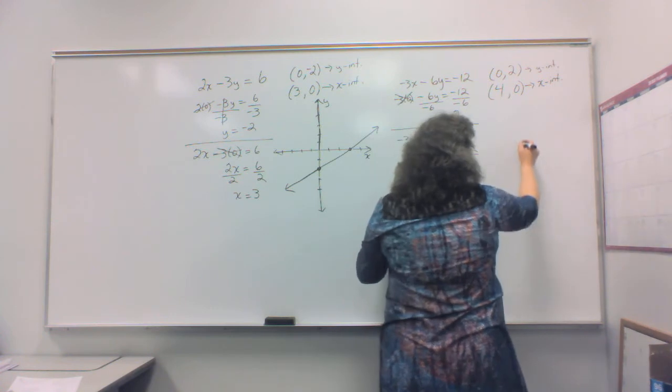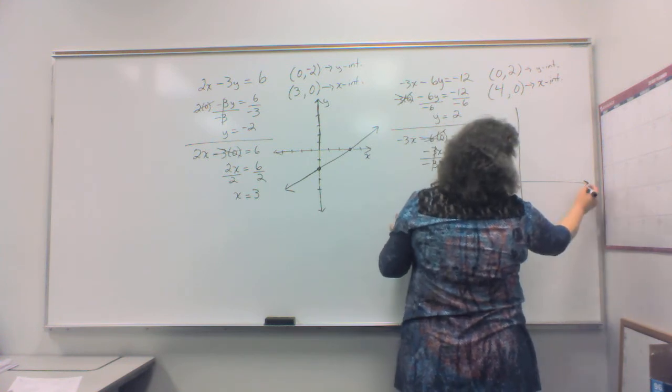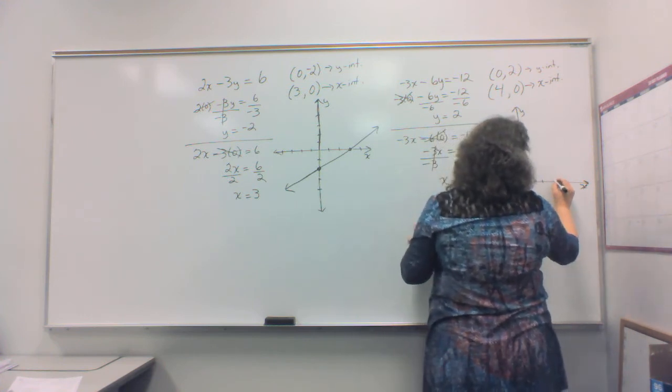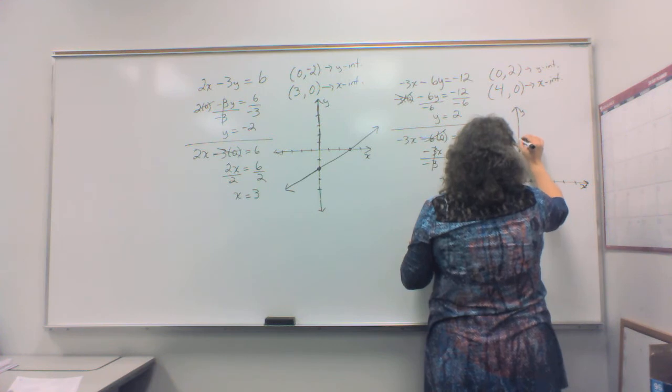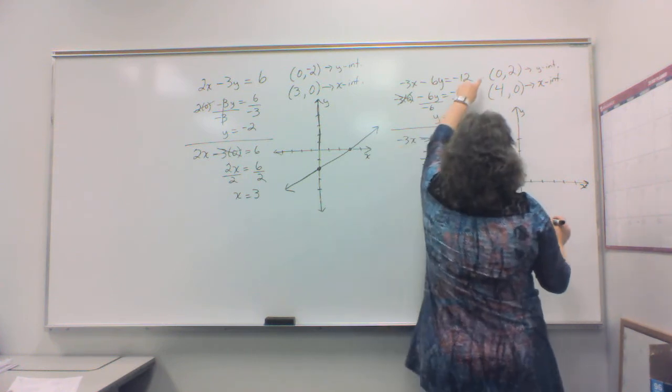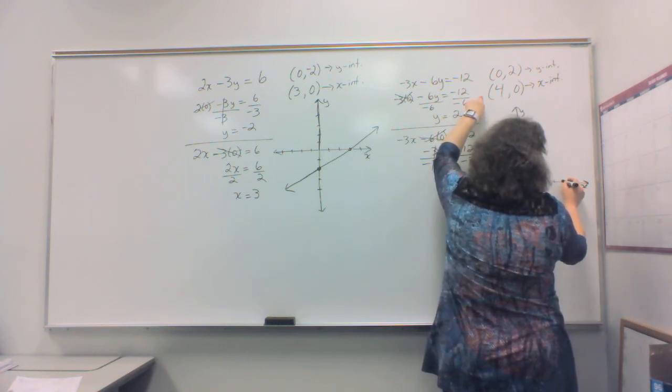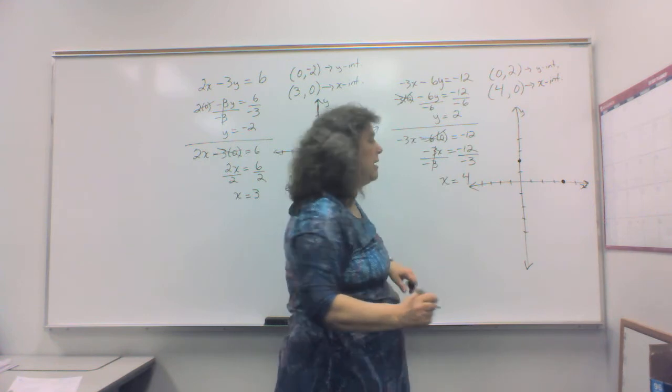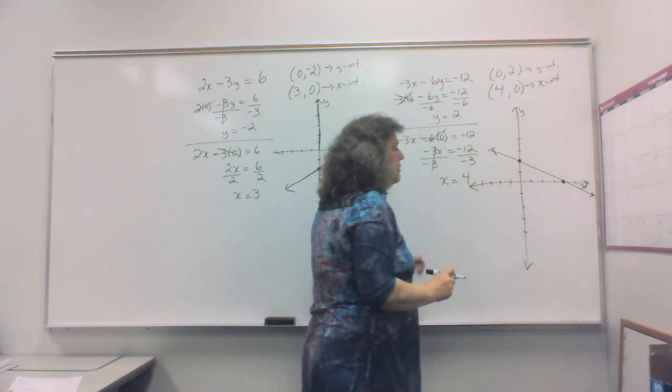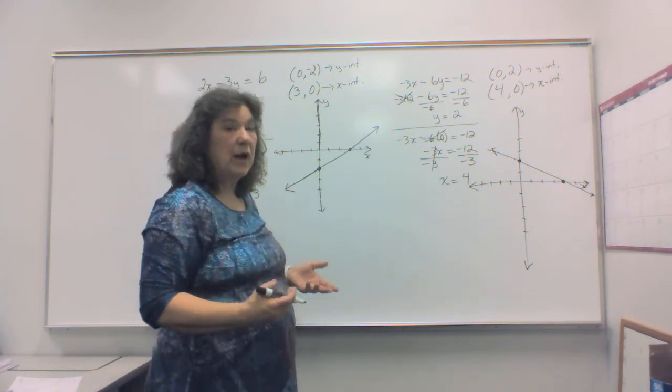And now my picture, my graph. So I have an x and a y. And let's start drawing hash marks. I have a 0, 2. That's my first one. And 4, 0 is my second one. Notice my two dots. And now we're going to draw the line. As you can see, again, it makes another line connecting those two x and y intercepts.